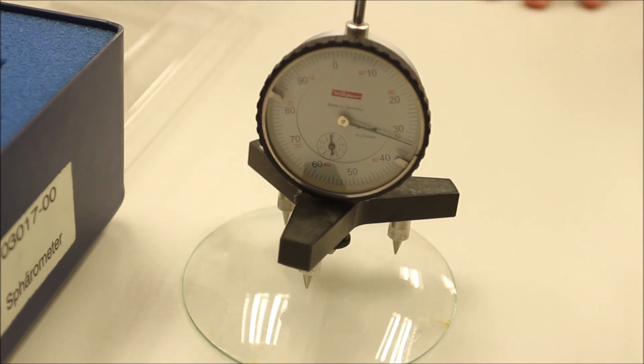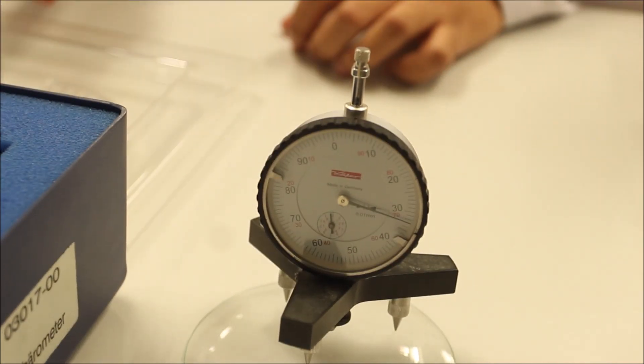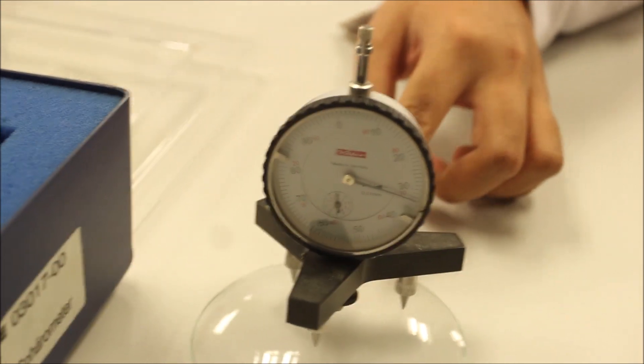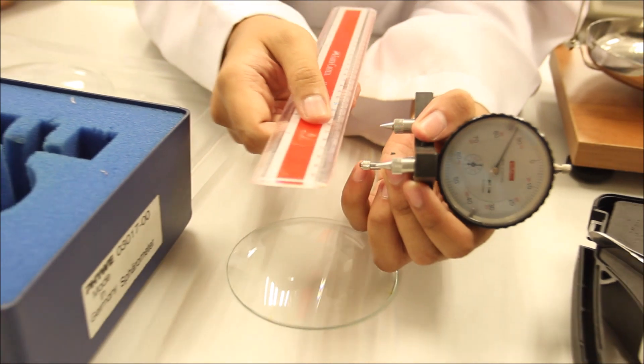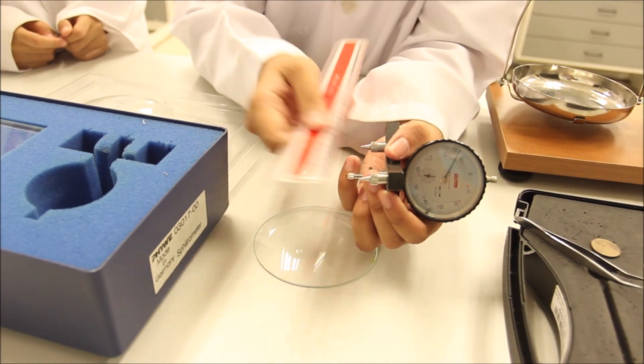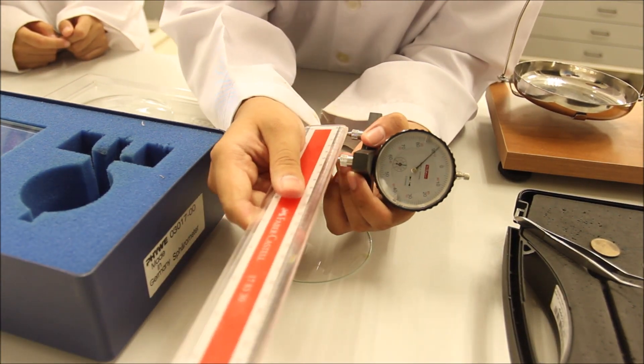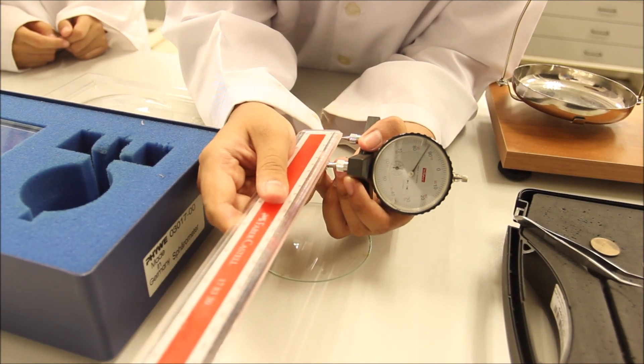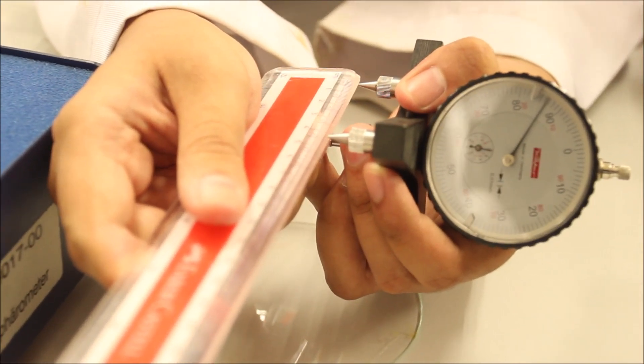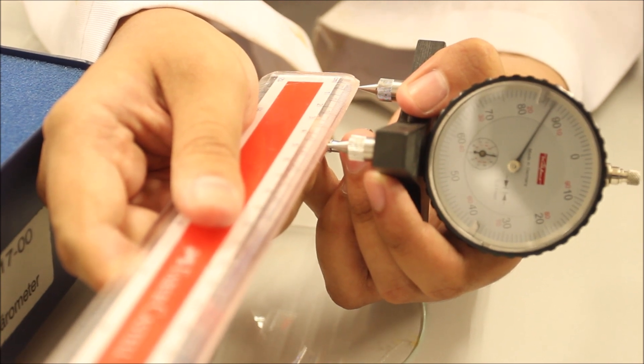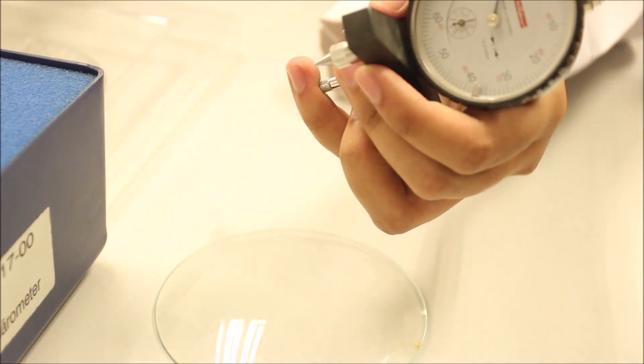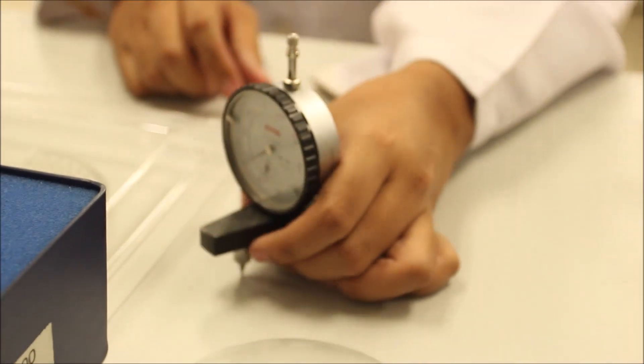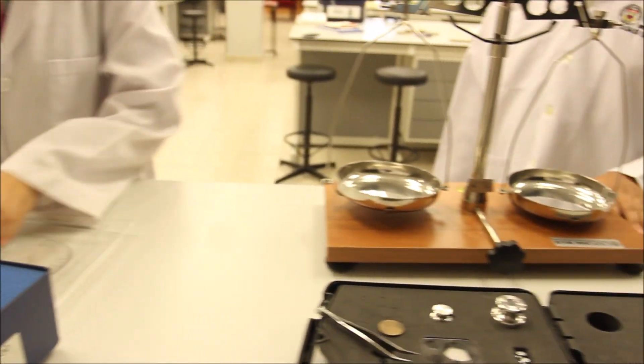We also need to calculate the radius of curvature. This is the value for H. For the value of A, just take the ruler and measure the two points here. Based on the ruler, the legs are 4.4 centimeters apart. So that's the value of A.